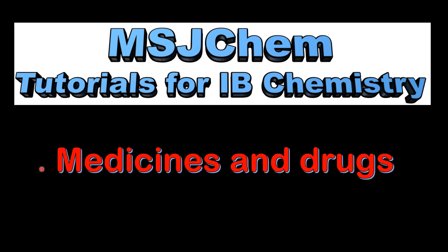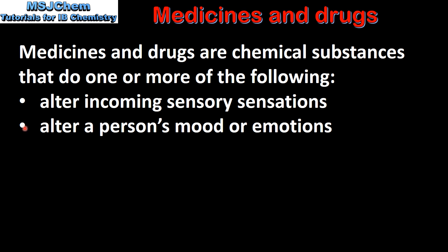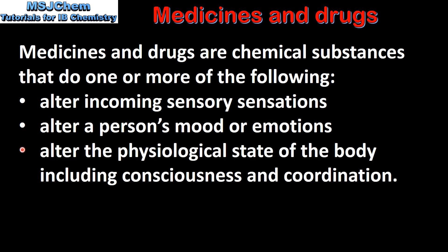This is MSJ Chem. In the first video for Option D, we look at medicines and drugs. Medicines and drugs are chemical substances that do one or more of the following: they alter incoming sensory sensations, they alter a person's mood or emotions, and they alter the physiological state of the body, including consciousness and coordination.